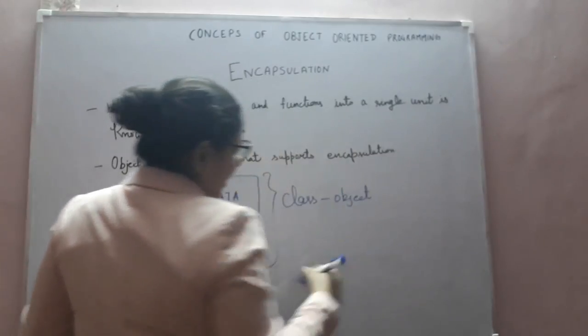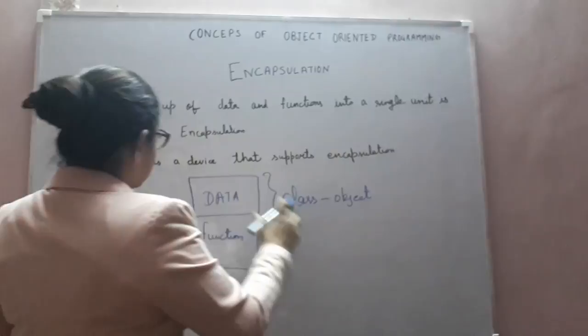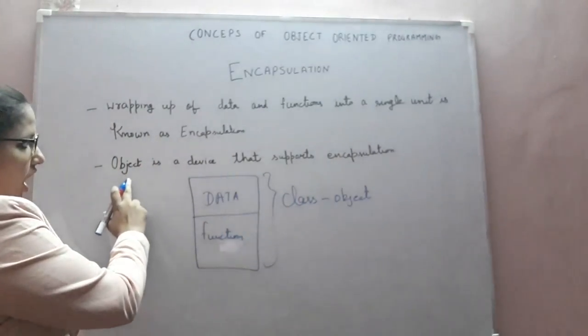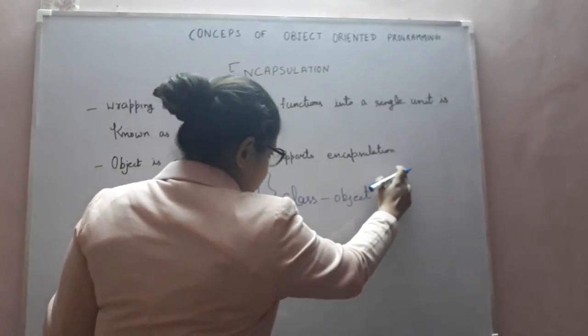...a type of, or is a variable of class, so we can say object is a device that supports encapsulation.